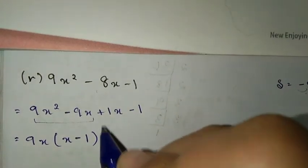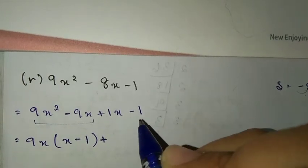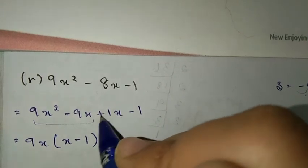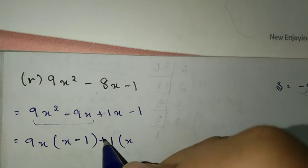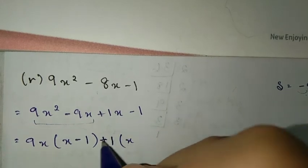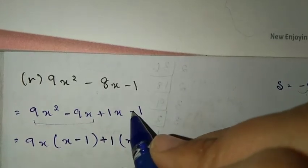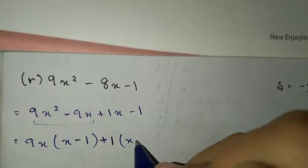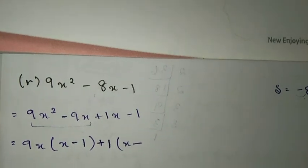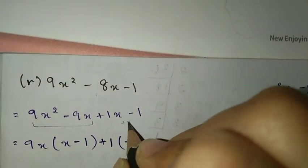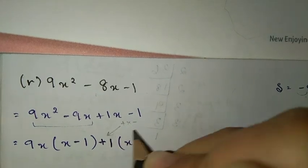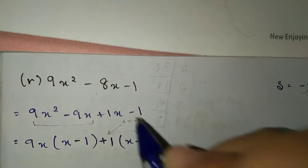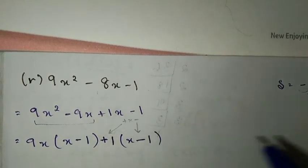Plus 1x into 1, open bracket, x plus 1. Now plus into minus: if you say plus into plus, it's supposed to be plus, so that's wrong. So it'll be plus into minus, which means the sign becomes minus.